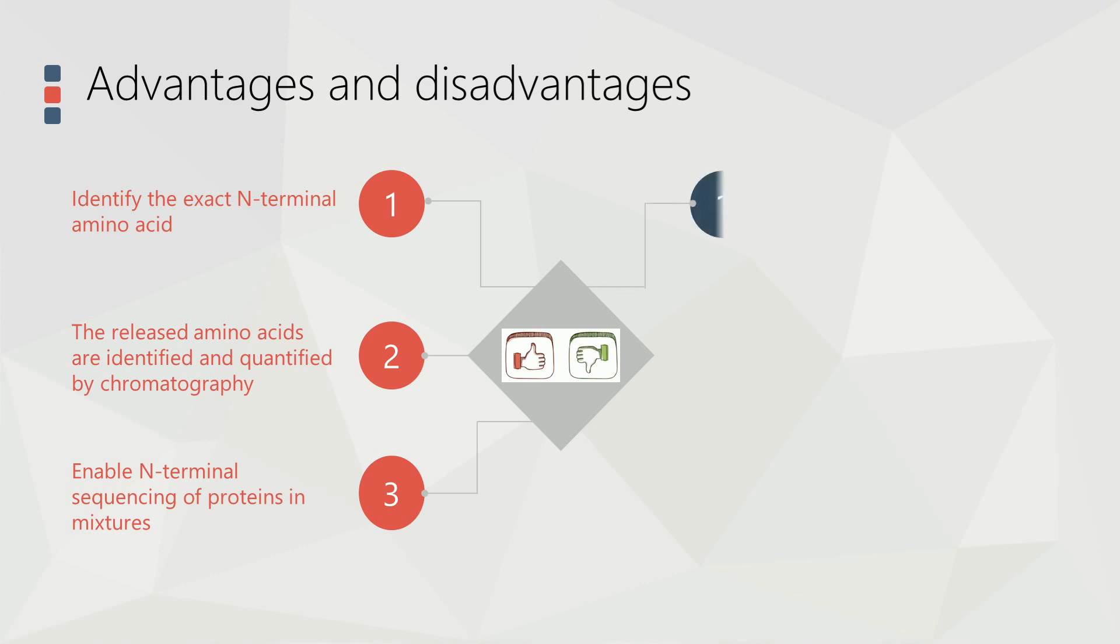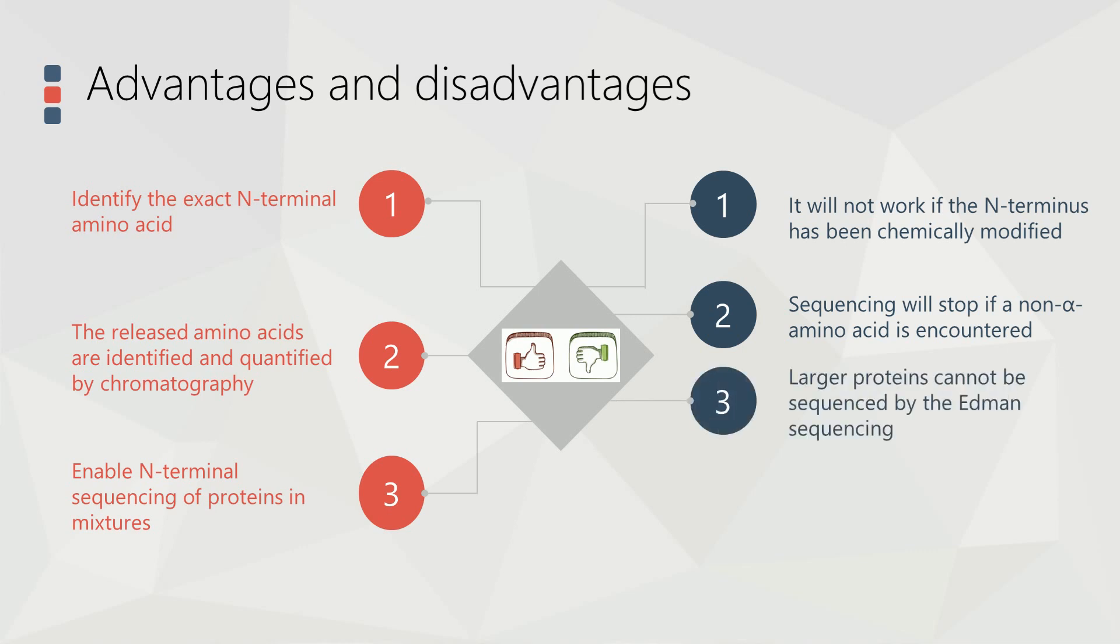However, Edman degradation sequencing will not be available when the peptide's N-terminus has been chemically modified, such as acetylation. And as the phenylisothiocyanate cannot react with non-alpha amino acids, sequencing will stop if a non-alpha amino acid like isoaspartic acid is encountered. Moreover, larger proteins cannot be sequenced and the positions of disulfide bridges cannot be demonstrated.